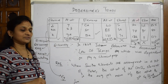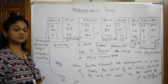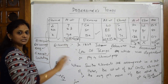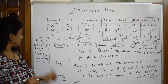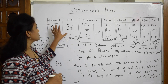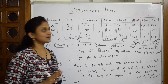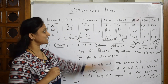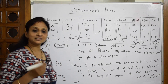So though Dobereiner gave us the idea of arranging elements, his Law of Triads was limited to only two sets. The limitation to write is: Dobereiner's Triads was applicable only to two sets — lithium, sodium, potassium and calcium, strontium, barium — but was not valid for further elements like sulfur, selenium, tellurium or chlorine, bromine, fluorine.